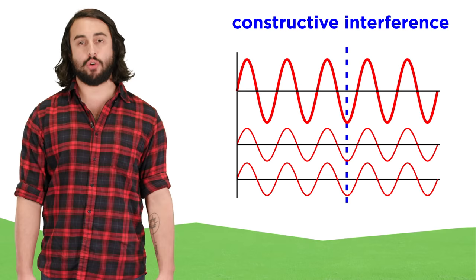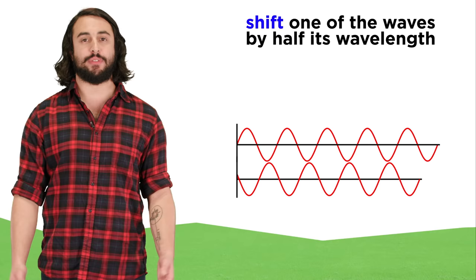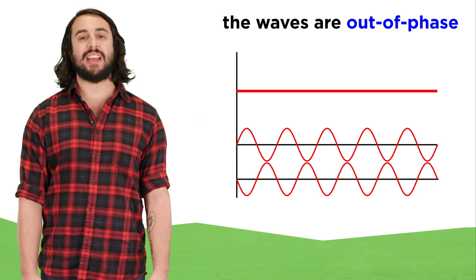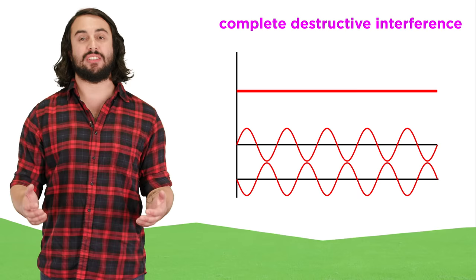But then if we shift one of these by half its wavelength, now the crests of one align with the troughs of another, and at every single point on the x-axis these waves will add up to zero. They are said to be exactly out of phase, and this will be an example of complete destructive interference.